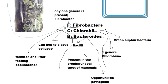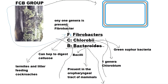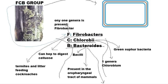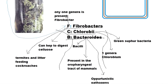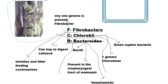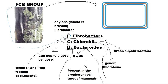Bacteroidetes are bacilli, meaning rod-shaped. An interesting point about Bacteroidetes is that they contain the genus Sphingobacter. This is the same Sphingobacter that Calver and Smith once proposed as a phylum, but since it was not accepted by the scientific community, it was reduced to a class under Bacteroidetes — called Sphingobacteriia — containing the genus Sphingobacter.